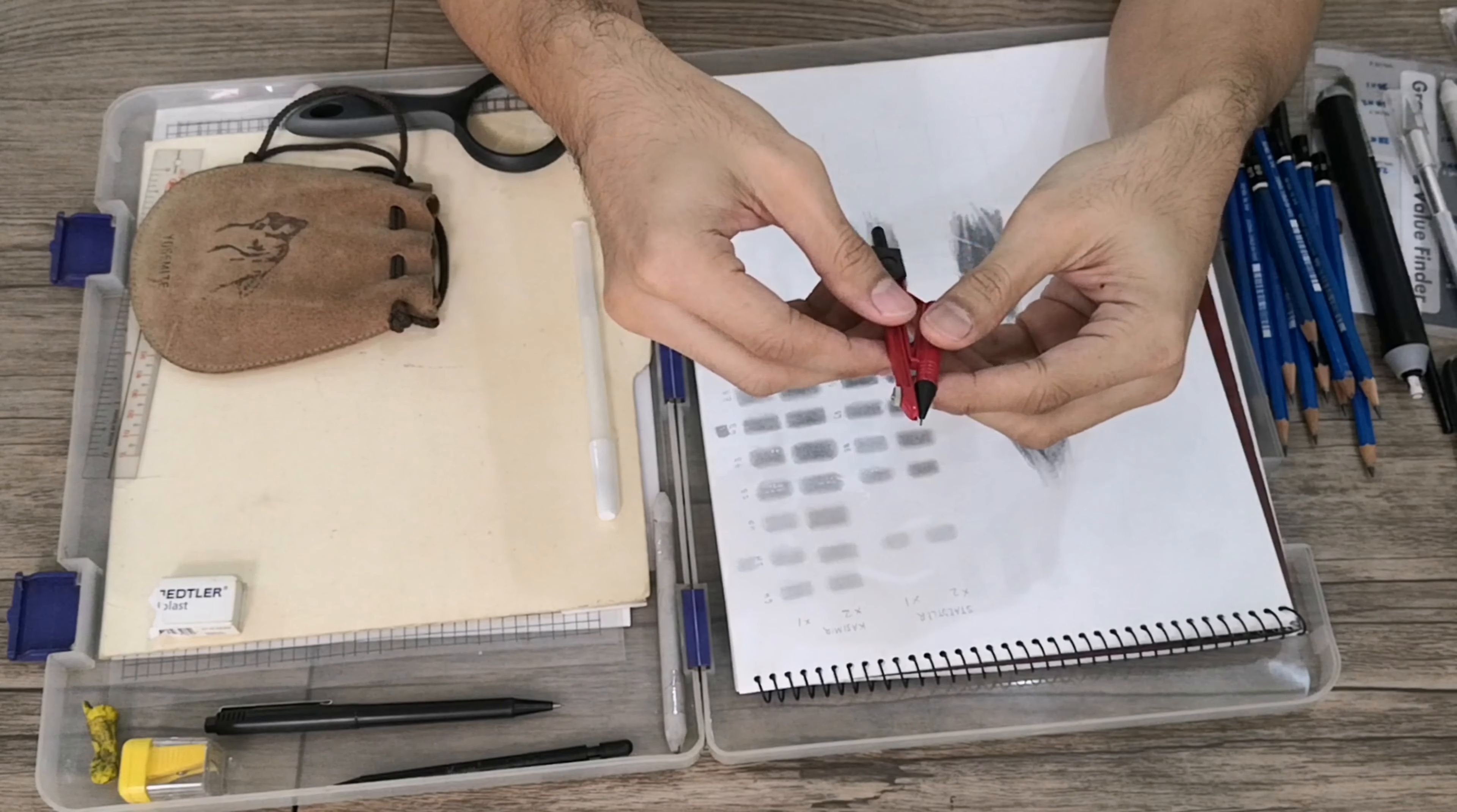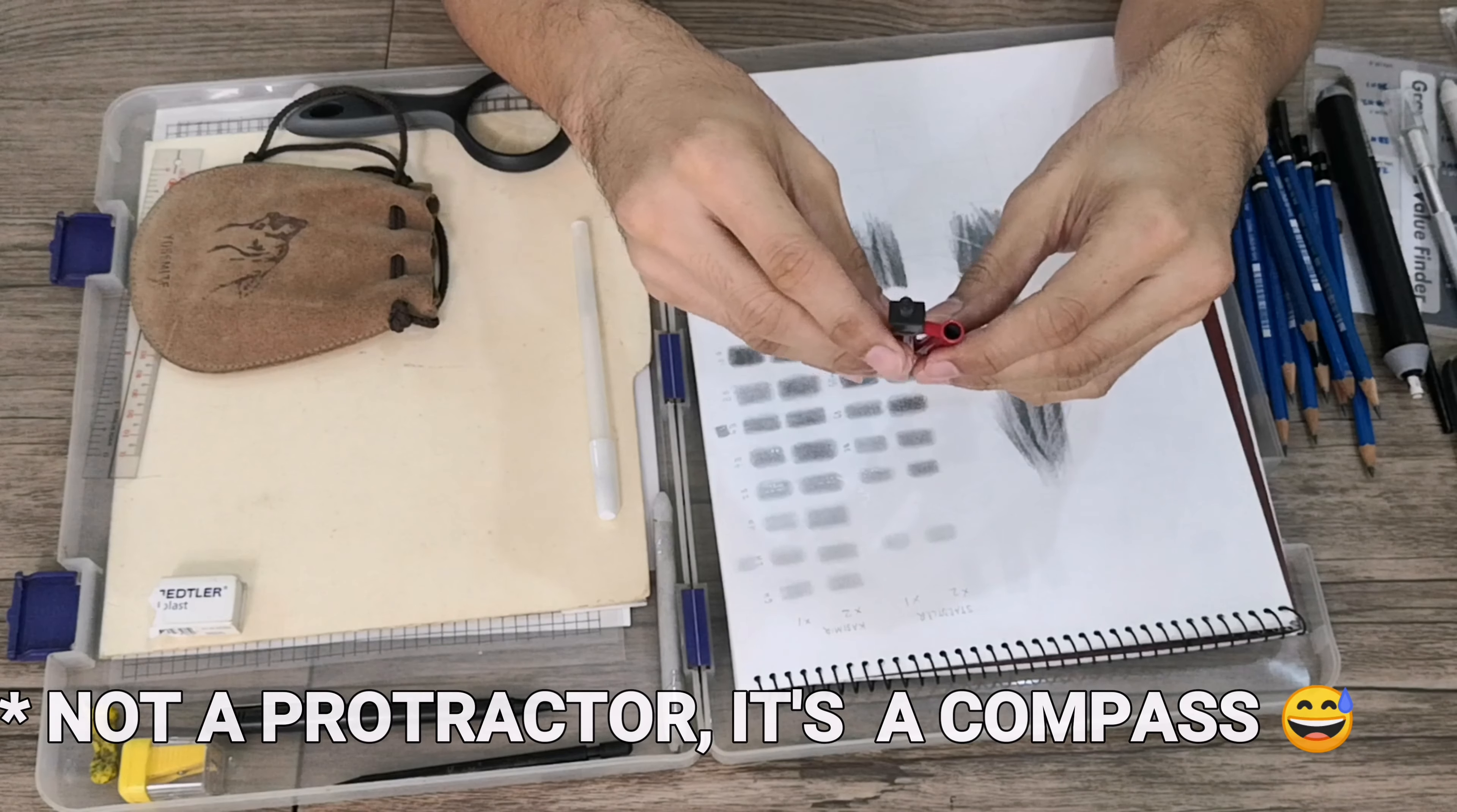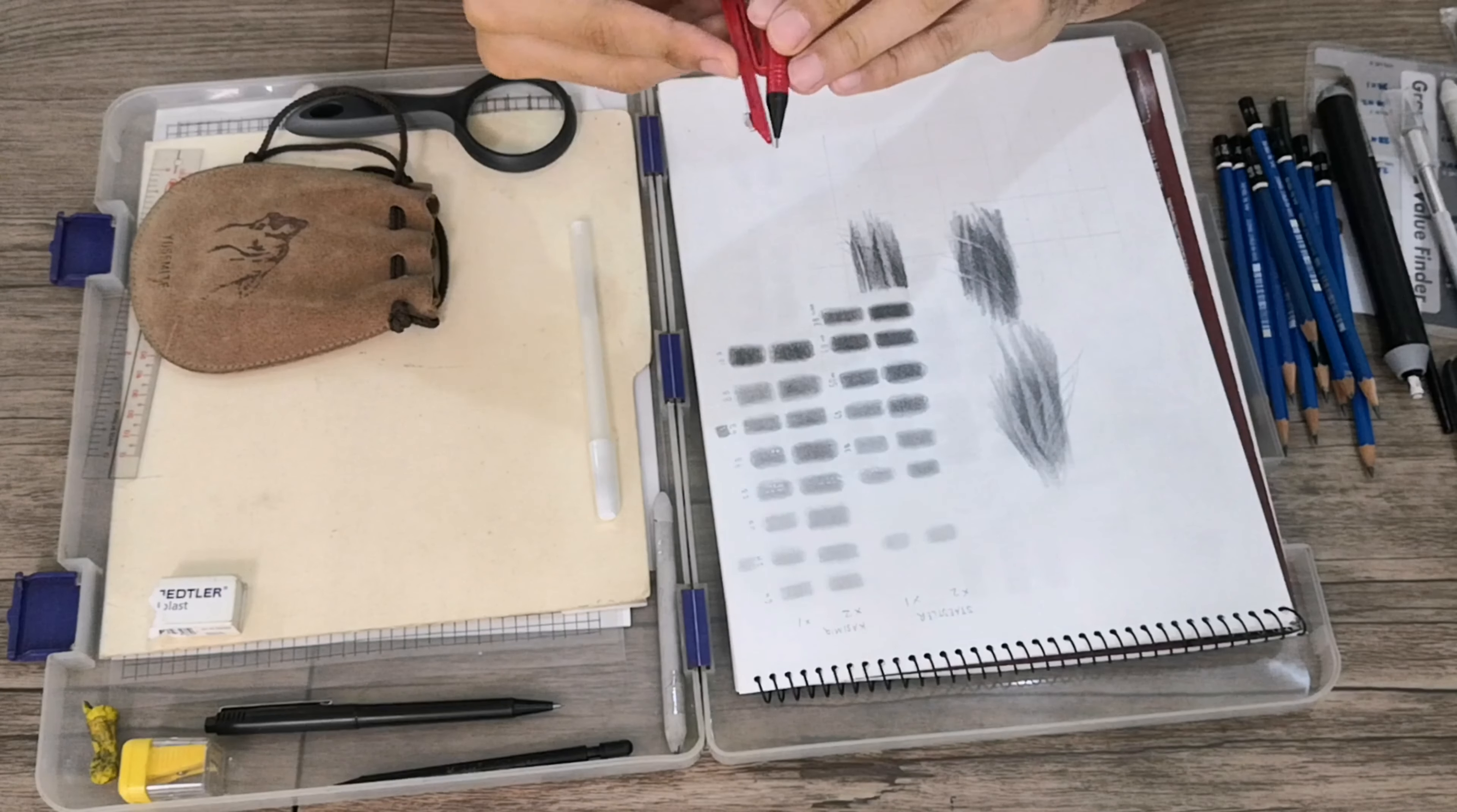Also here I have this protractor. The purpose of this protractor is actually to measure for any comparison in your drawing. I will also explain this later so that in your reference drawing you can use this one and correlate it with your existing drawing.